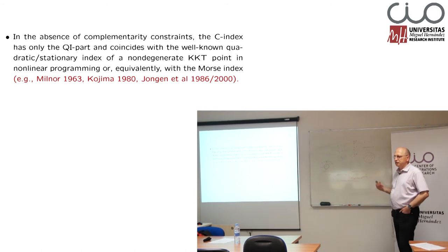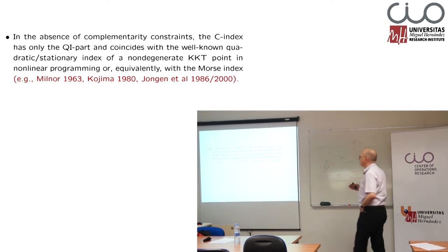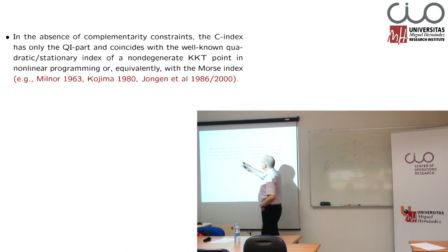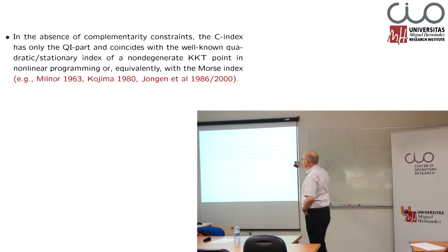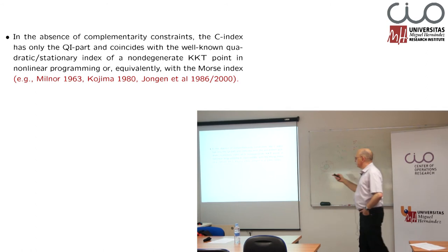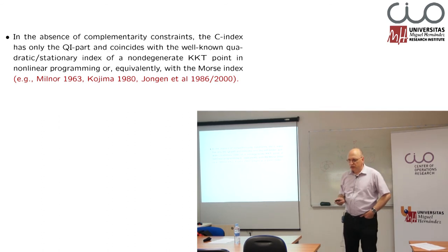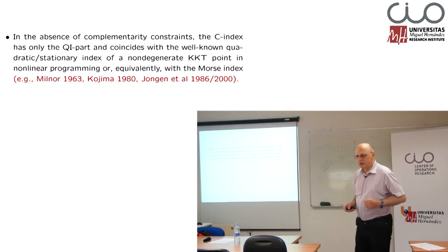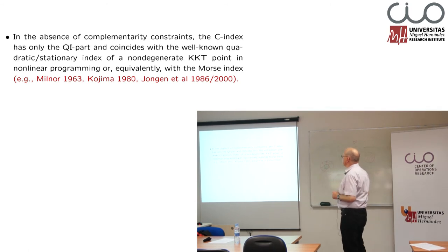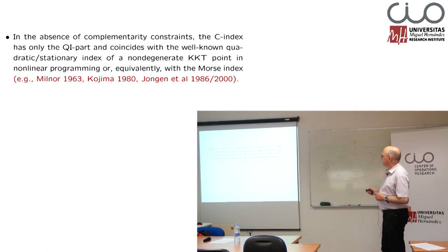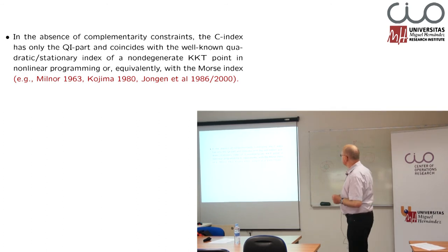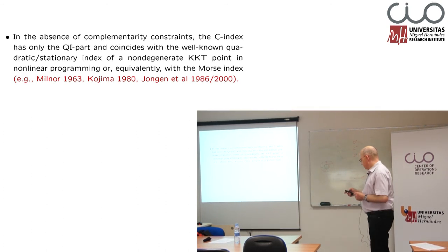If we do not look at complementarity constraints — only at standard optimization — we have only the part with negative eigenvalues, which is the quadratic index part. Then you can go back in the literature: Milnor was the first one with Morse theory in 1963 who used this index — quadratic index, number of negative eigenvalues. Kojima used it and called it the stationary index when he characterized strongly stable stationary points. Also Jong and Jonker-Trild in the book from 1986, newly published in 2000, used this and called it quadratic index.